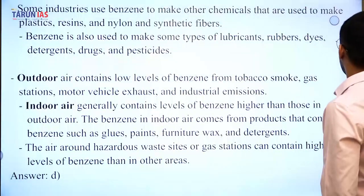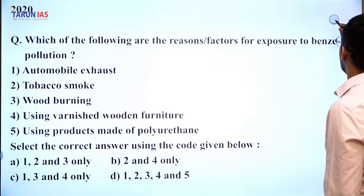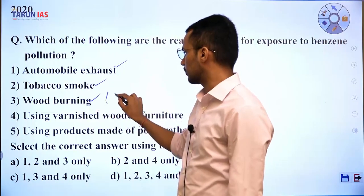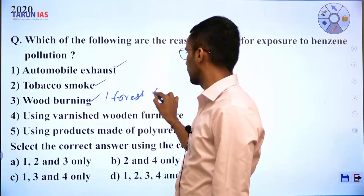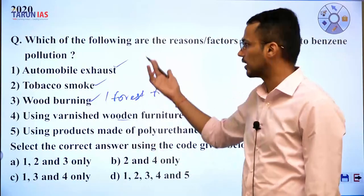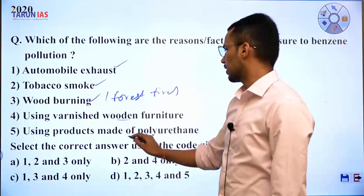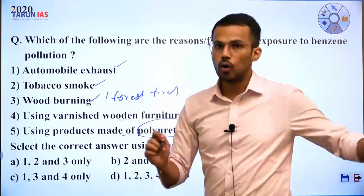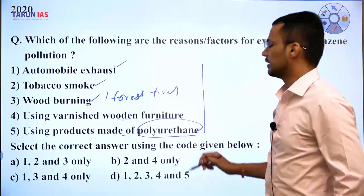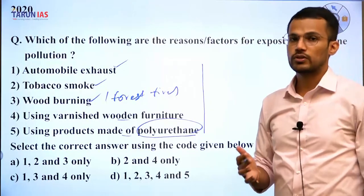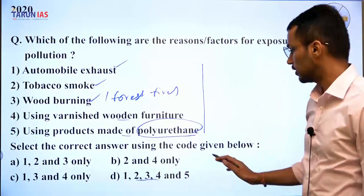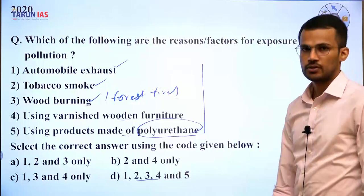All five statements in the question are correct with respect to benzene pollution: automobile exhaust (motor vehicle), tobacco smoke, wood burning (forest fire analogy), using varnished wooden furniture (paints and varnishes contain benzene), and using polyurethane products. Therefore the answer is D — 1, 2, 3, 4, and 5. Note: the official key for 2020 was not available at the time of this session as the process was not yet complete.